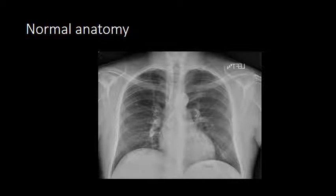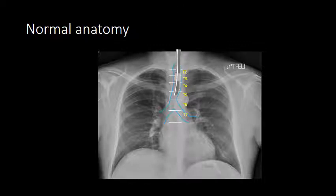When we look at the normal anatomy on a chest radiograph, here we see the outline of the trachea. We can see the vertebral bodies in the background, and the carina occurs right at the T6–T7 disc space in this person. With the endotracheal tube in place, we have a 5 centimeter distance between the carina and the tube tip.